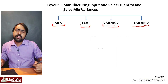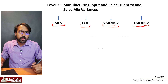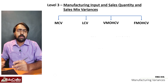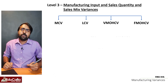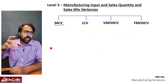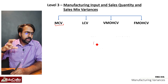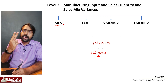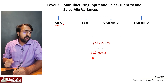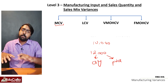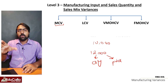We will discuss such variances. Material Cost Variance is $15. There are two reasons for this variance: one is the price, and the other is quantity.